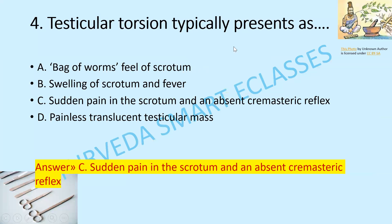Testicular torsion typically presents as: bag of worms feel of scrotum, swelling of scrotum and fever, sudden pain in the scrotum and an absent cremasteric reflex, or painless translucent testicular mass? The answer is sudden pain in the scrotum and an absent cremasteric reflex.